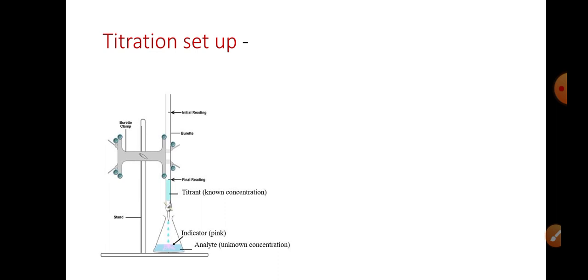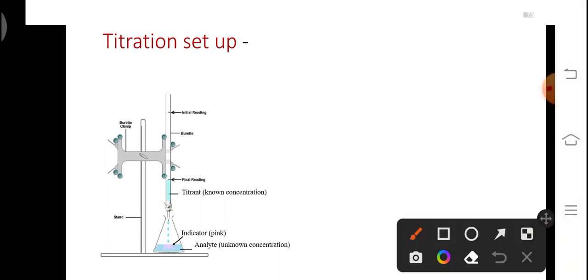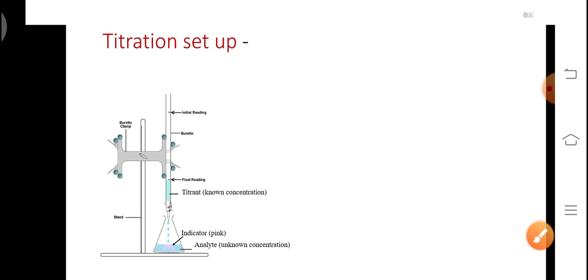For this we require a titration setup like this — a burette, a burette stand, and a conical flask. In the burette we will fill the acid which is known to us. In the conical flask we will pipette out a given water sample and add indicators. The indicators used in such titrations are acid-base indicators, for example phenolphthalein and methyl orange.